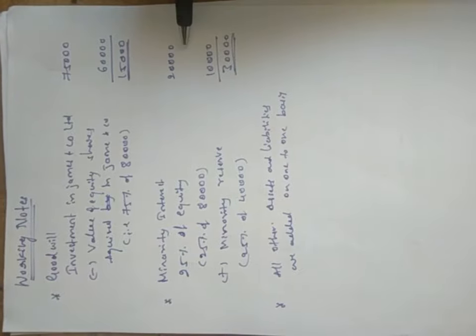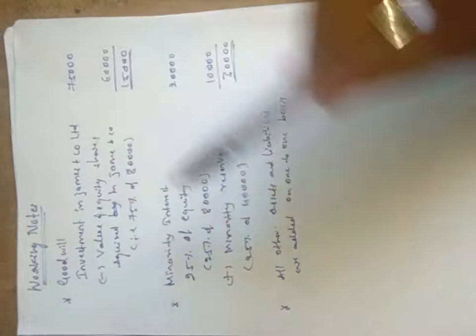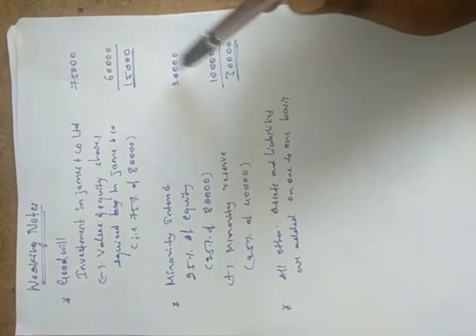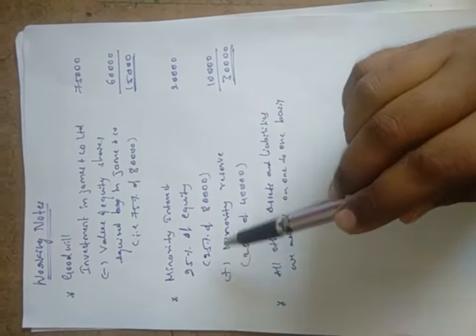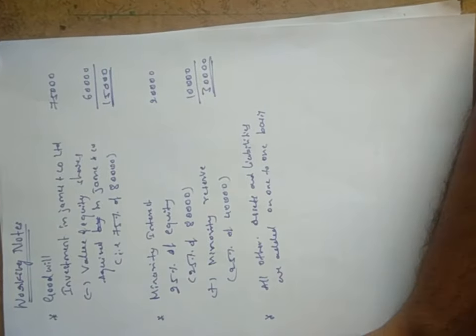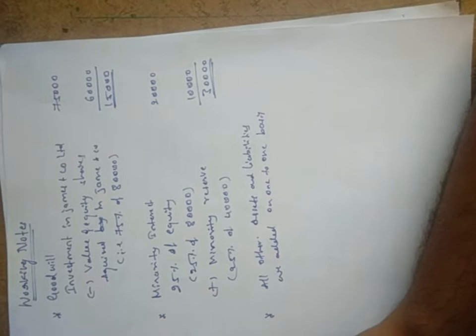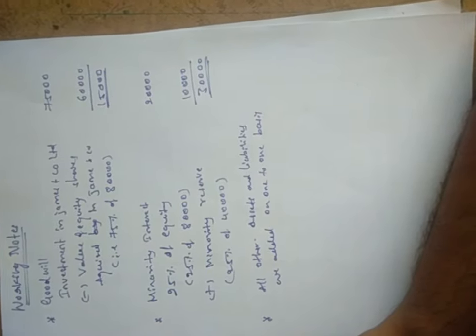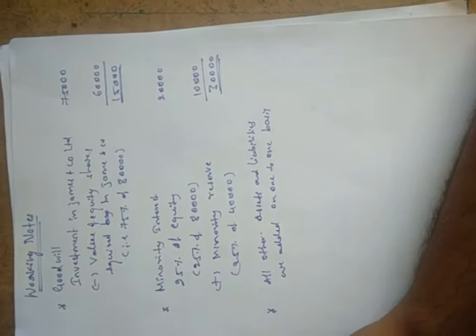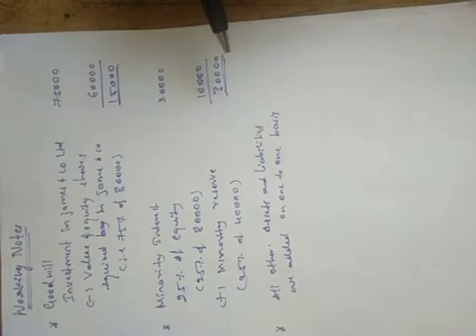Minority interest: 25 percent of equity — 25 percent of 80,000 — equals 20,000. Plus minority reserve: in case of James and Company, the total reserves are 40,000, and 25 percent of 40,000 is 10,000. So total minority interest = 20,000 plus 10,000 = 30,000.